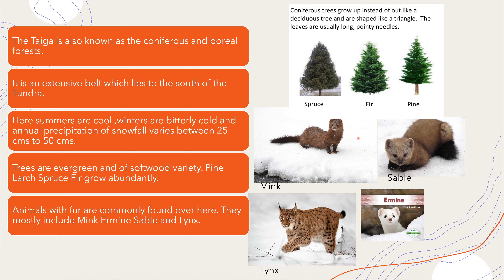The taiga is also known as the boreal forest. Here the summers are cold but winters are bitterly cold, and the annual precipitation or snowfall varies between 25 cm to 50 cm. Trees are evergreen and are of soft wood varieties. So these areas are a storehouse for the pulp and paper making industry. The different coniferous trees which are found in abundance are pine, larch, spruce and fir.